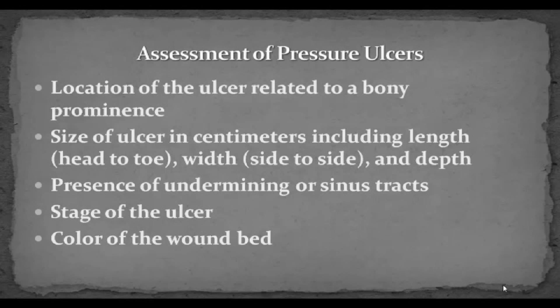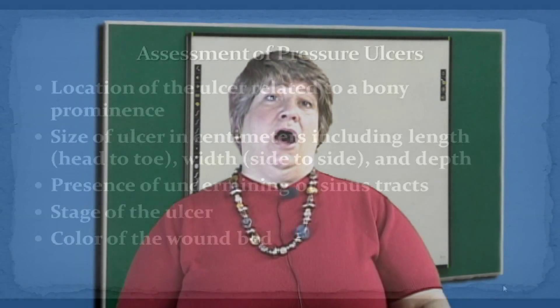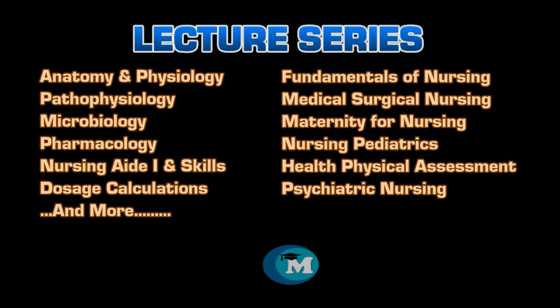In assessing pressure ulcers, it's very important that you document the location of the ulcer in relation to a bony prominence. We also measure the size of the ulcer in millimeters or centimeters — this is important for baseline, and in a long-term care facility we reassess at least once a week. You also want to determine if there is any undermining or sinus tracts, the stage of the ulcer, and the color of the wound bed.